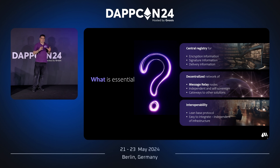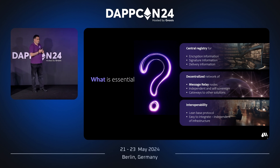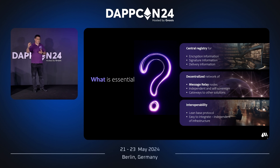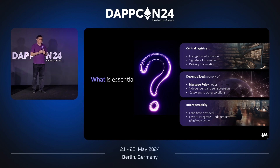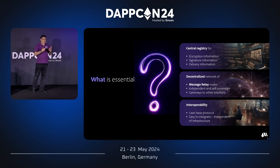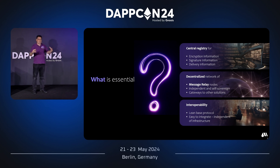When we see all these things we can do with Web3 technology in the messaging area, what are the essential points to focus on when building such a protocol? First, we need a central but decentralized registry for communication information — if I want to send an encrypted message to someone, I need a registry where I can look up the keys needed for encryption and the information on how to deliver the message. Then I need a decentralized network to deliver messages with no intermediates, no censorship possibilities, and which can connect to other networks. And interoperability is very important so we can grow the Web3 messaging ecosystem and build a connected ecosystem rather than small silos.